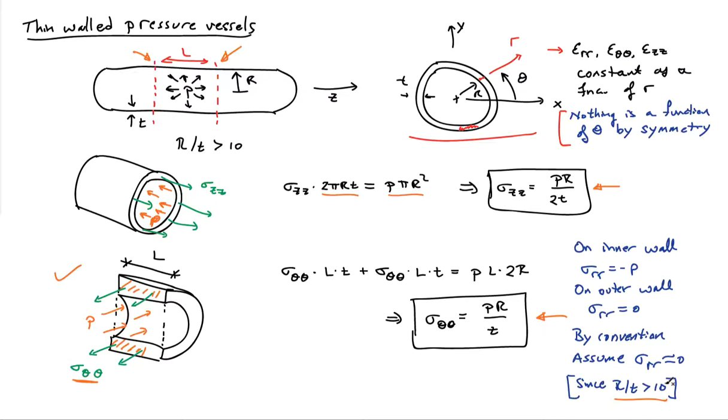So this is a classical example of using thinness to determine the stress state inside some kind of mechanical system. And it all starts with this assumption that the strains are constants as a function of radial position through the wall thickness.